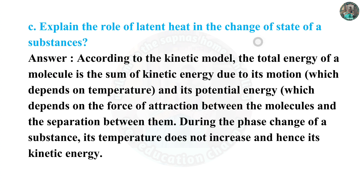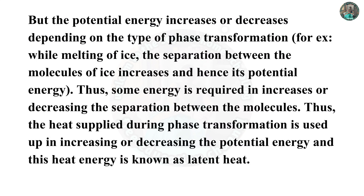Question 7c: Explain the role of latent heat in the change of state of a substance. According to the kinetic model, the total energy of a molecule is the sum of kinetic energy due to its motion, which depends on temperature, and its potential energy, which depends on the force of attraction between molecules and their separation. During a phase change, temperature does not increase, so kinetic energy remains constant. But potential energy increases or decreases depending on the type of phase transformation. For example, while melting ice, the separation between molecules increases and hence potential energy increases. Thus the heat supplied during phase transformation is used in increasing or decreasing the potential energy, and this heat energy is known as latent heat.